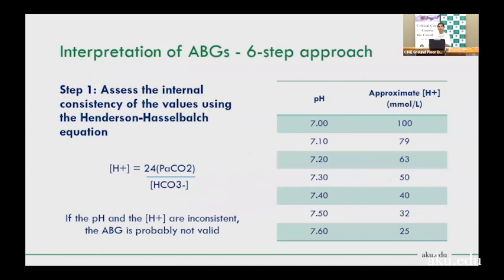ABGs are interpreted using a six-step approach. Step one: confirm the ABG report matches the patient and is internally consistent, using the Henderson-Hasselbalch equation. A table shows expected hydrogen ion concentrations at various pH values. If the calculated hydrogen ion concentration does not match the pH, the sample is invalid and ABGs should be repeated.